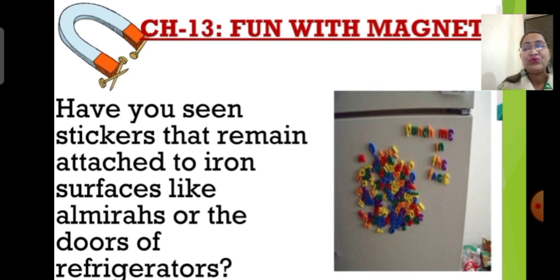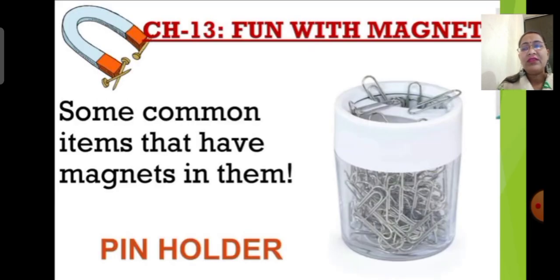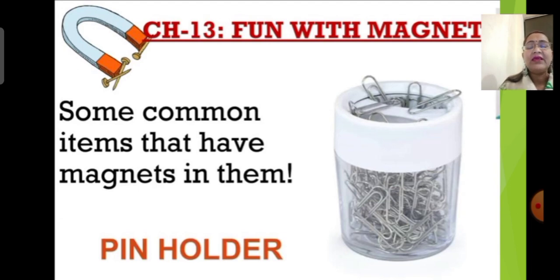Some common items that have magnets in them, which we come across frequently: first, a pin holder. A pin holder has a magnet in it which holds all pins in one place without them getting scattered. Since pins are made of metal, they are held in place by the magnet inside the pin holder.